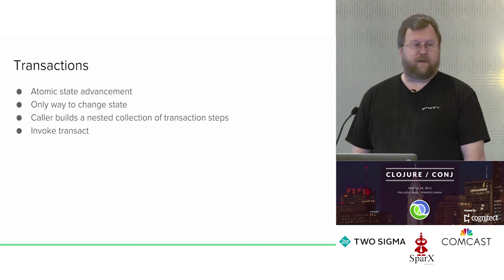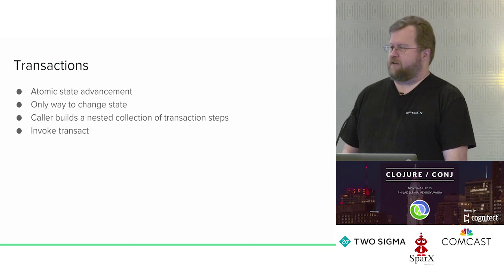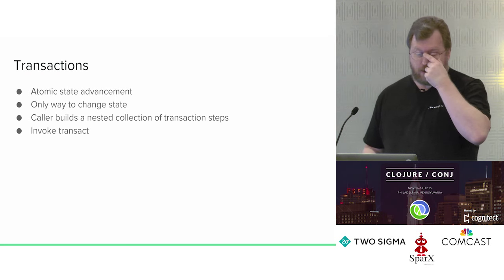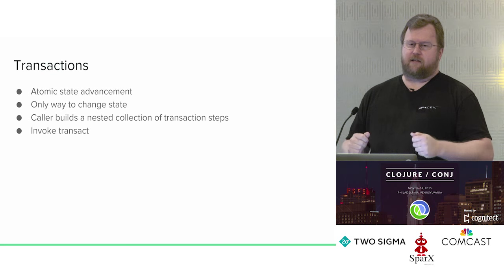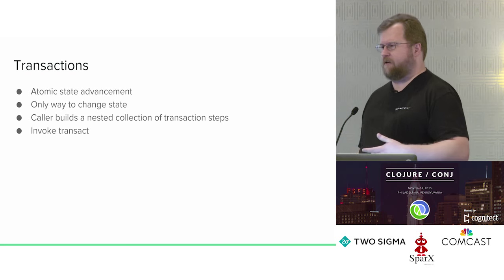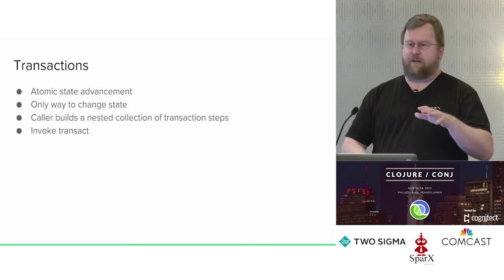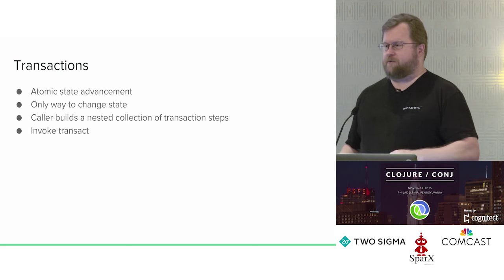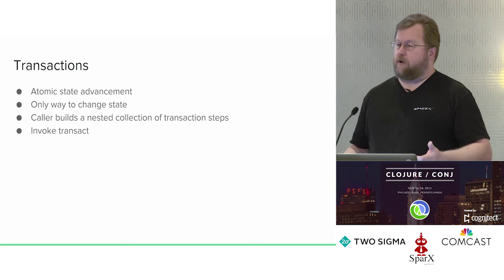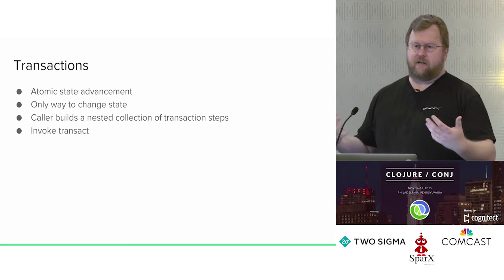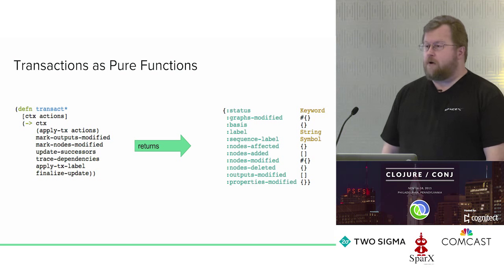Regarding transactions — if anyone's used Datomic it's the same exact idea; we were heavily inspired by Datomic. It's atomic state advancement and the only way to change state. You build up your transaction data. One point we found important was the ability to build a nested collection — a vector with vectors within vectors — because if you try to make a flattened collection your code structure has to match that flattened structure. If you allow a nested collection of transaction steps, you can compose all your transaction-creating code in an arbitrary way that's natural for your code structure, making the code structure and the transaction isomorphic.